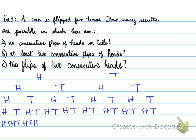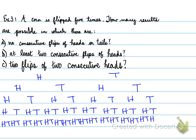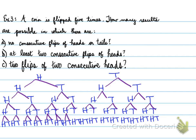We keep going until we have all of the different combinations listed. That's the 4th flip, and now we're on the 5th flip. We draw our connecting lines so that it connects to each one. Now we want to find no consecutive flips of heads or tails. No consecutive means you go heads, tails, heads, tails, heads — or tails, heads, tails, heads, tails.